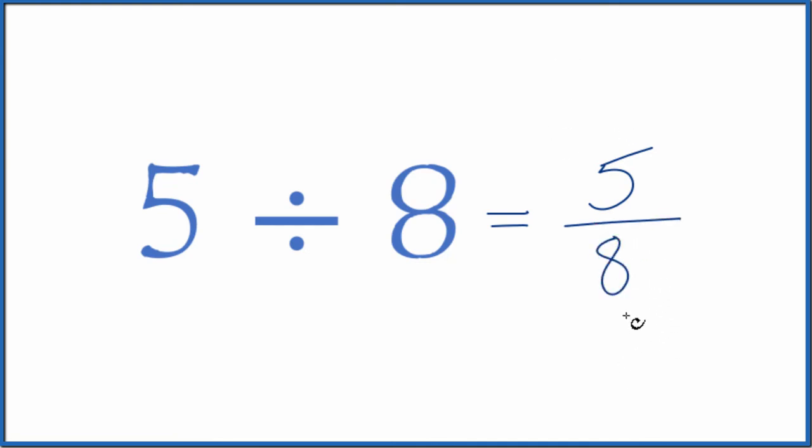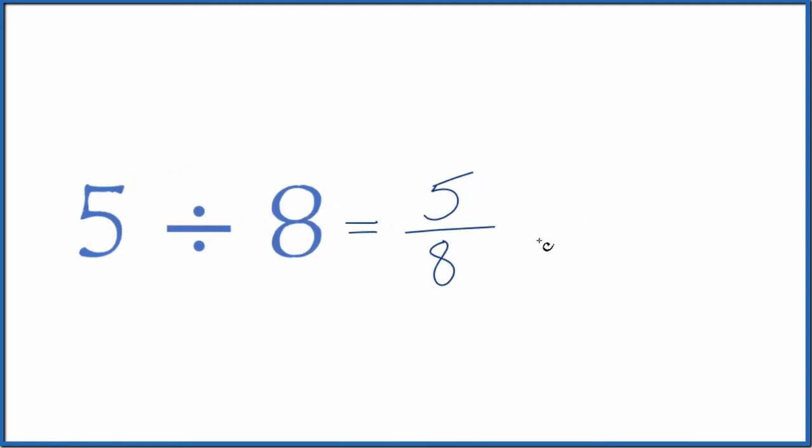So that's the fraction, five eighths. We could also do this on a calculator, divide five by eight. We would end up with five divided by eight is 0.625.